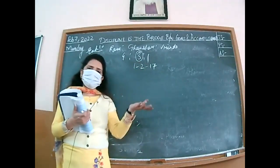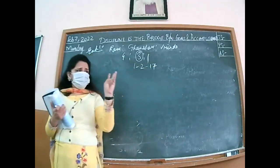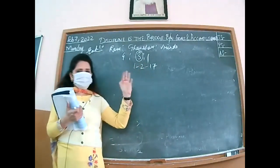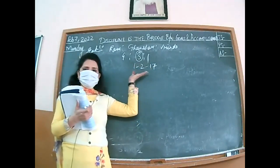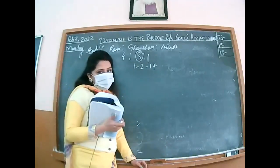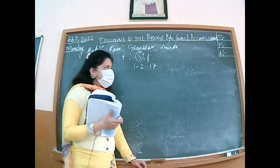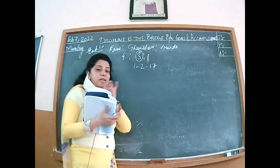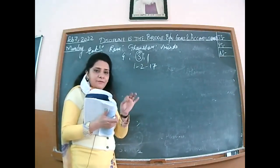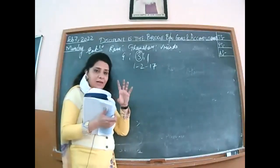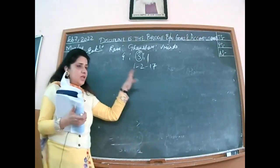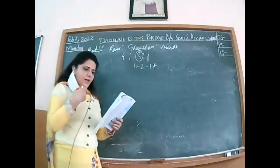After Ghansham's death, Ram and Vrinda decided their new ratio will be 1:1. Since it is a goodwill topic, it is my prior duty to calculate the gaining ratio. Ram's gain: new ratio 1/2 minus old 4/8 = nil (no change). Vrinda's gain: 1/2 minus 1/8 = 3/8. So Vrinda is the only gaining partner. The entry will be: Vrinda's Capital Account debited to Ghansham's Capital Account for whatever share of goodwill we calculate.